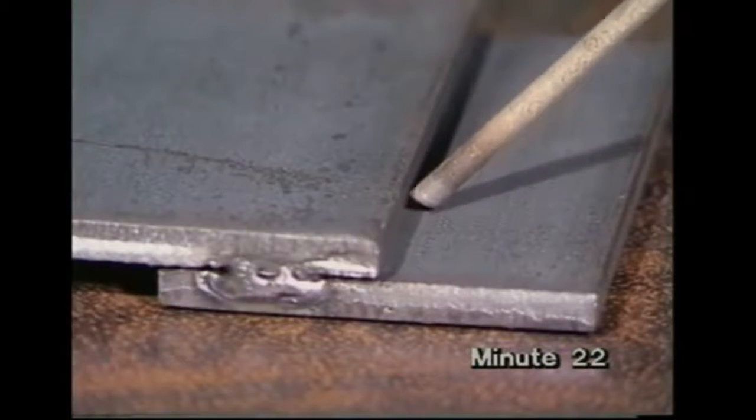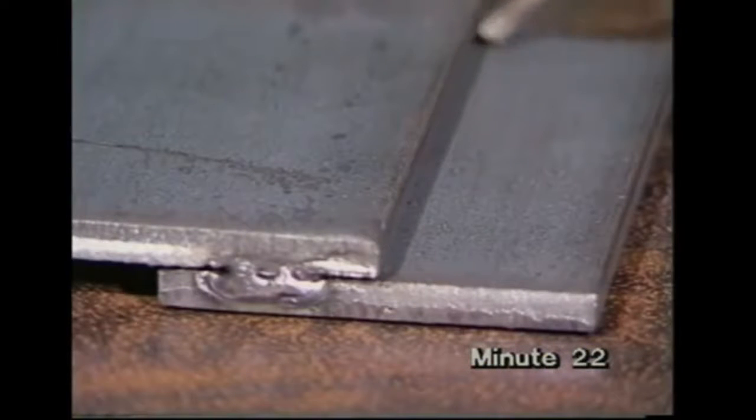Aim the electrode at 45 degrees to the vertical into the corner, as you did for the T joint.